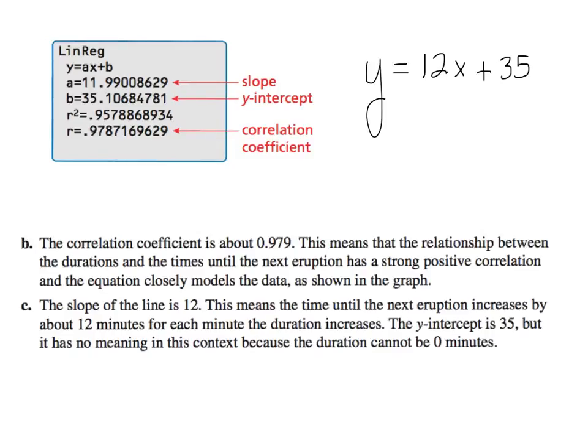Part B said, identify and interpret the correlation coefficient. So B would say the correlation coefficient is approximately 0.979. This means that the relationship between the durations and the times until the next eruption has a strong positive correlation, and the equation closely models the data as shown in the graph. Right here, the slope of the line is 12. What does that mean? Well, all you have to do is look at the equation. y is in minutes, x is in minutes. y represents the times until the next eruption, x is the duration of the eruption. So you would know that 12 means the time until the next eruption increases about 12 minutes for each minute the duration increases. The y-intercept is 35, but it has no meaning in the context because the duration of something cannot be 0 minutes.